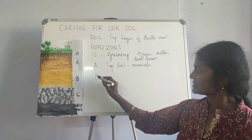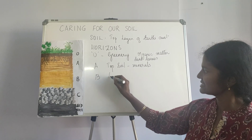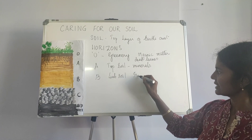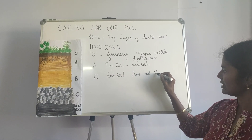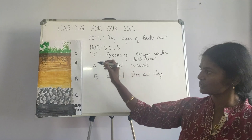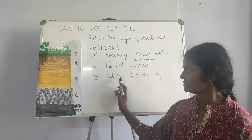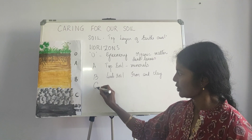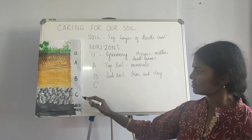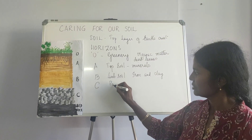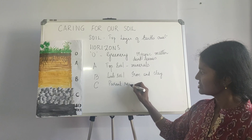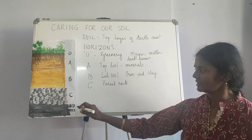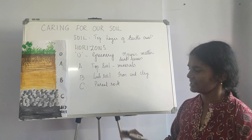Moving on to horizon B, this is called the subsoil, which is mostly made of iron and clay — not very friendly for plants. Maybe deep-rooted trees go down, but generally plants do not find any place in this horizon. Then we move on to horizon C and then the bedrock, which has the parent rock with smaller bits in C and huge rocks in the last area. So this is about the soil layers.